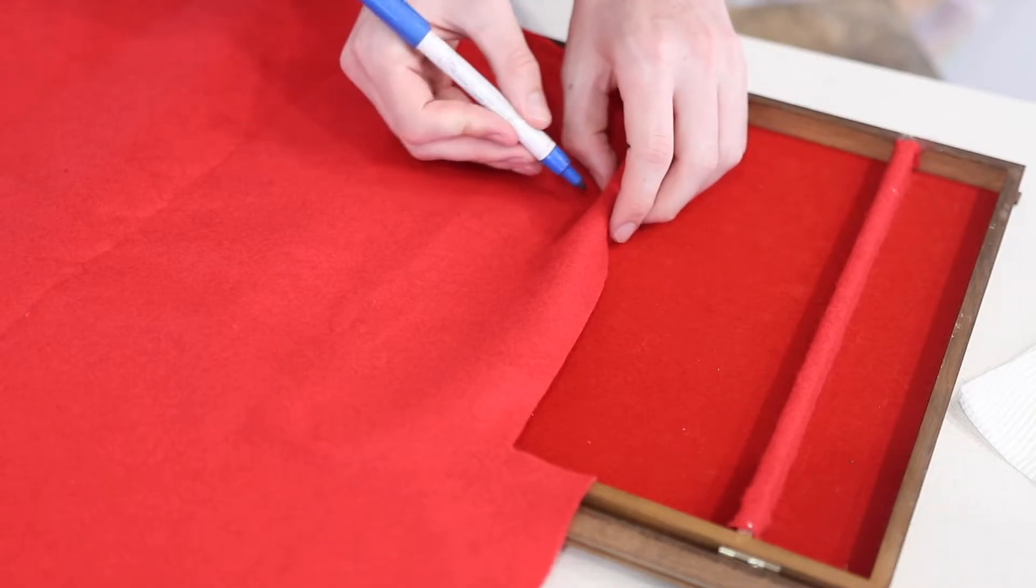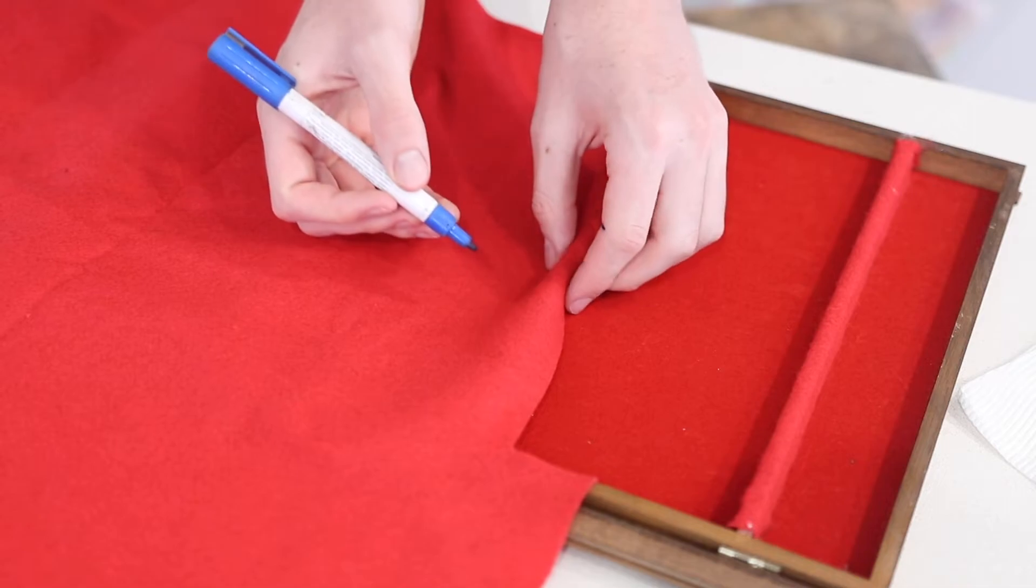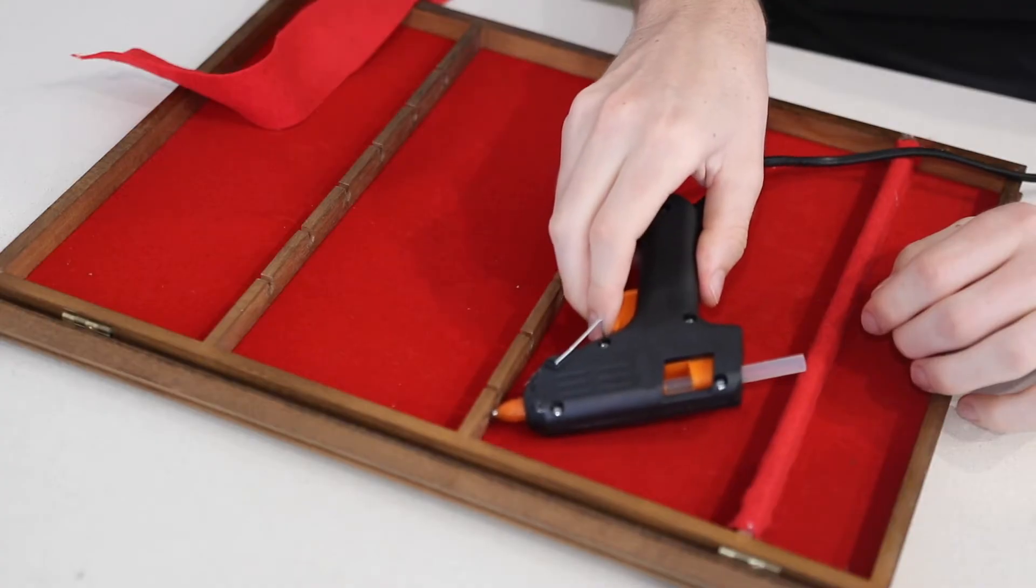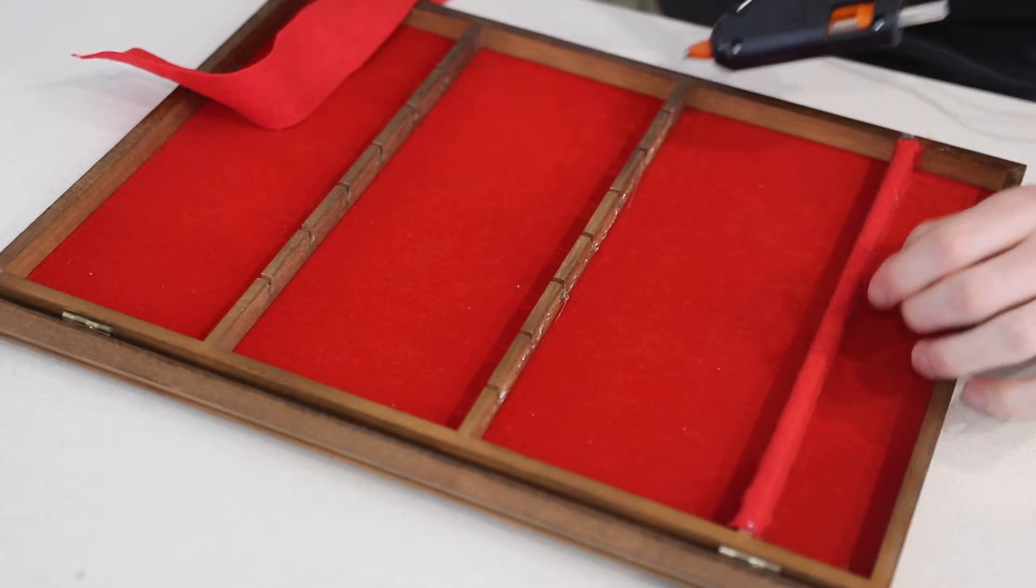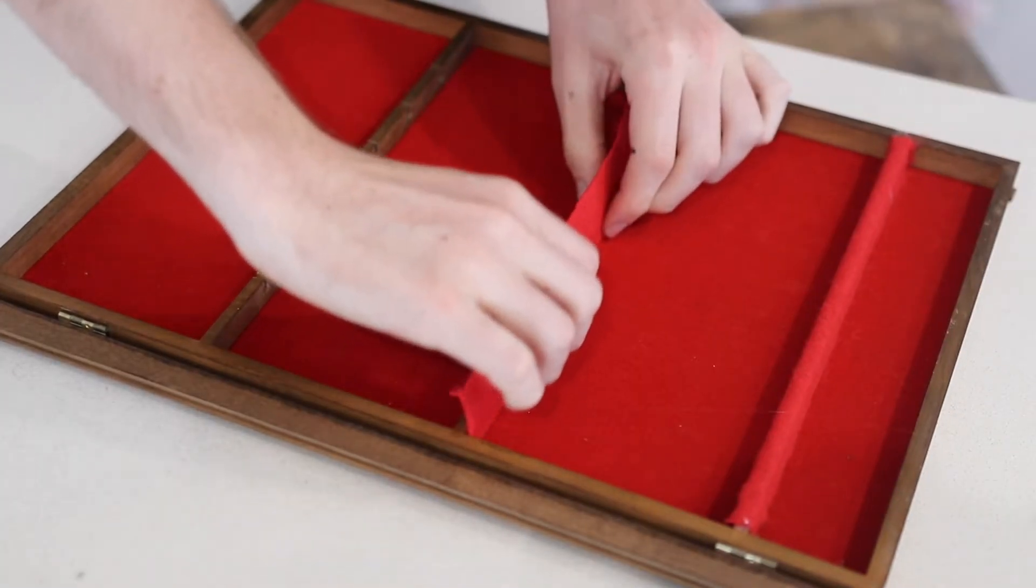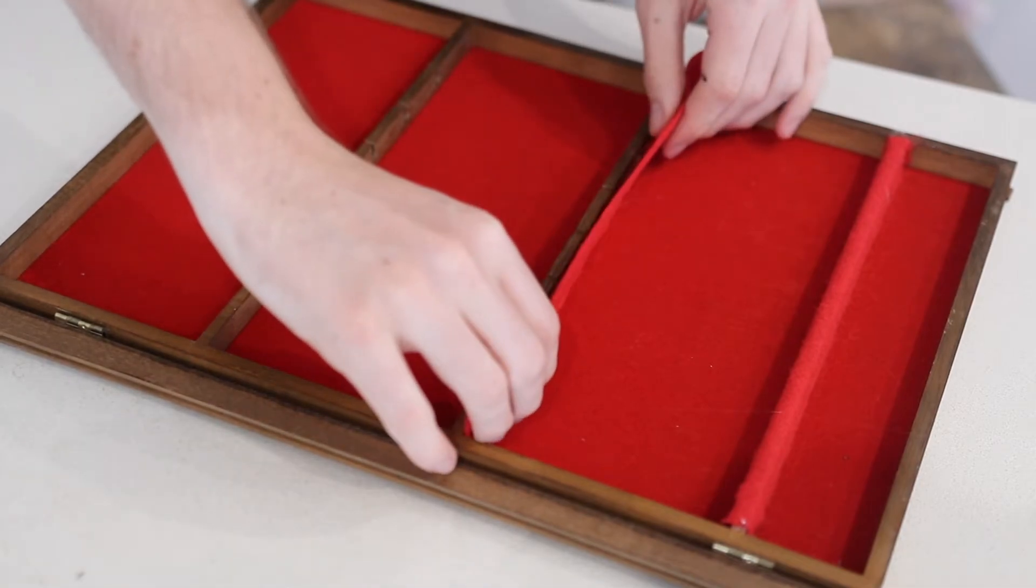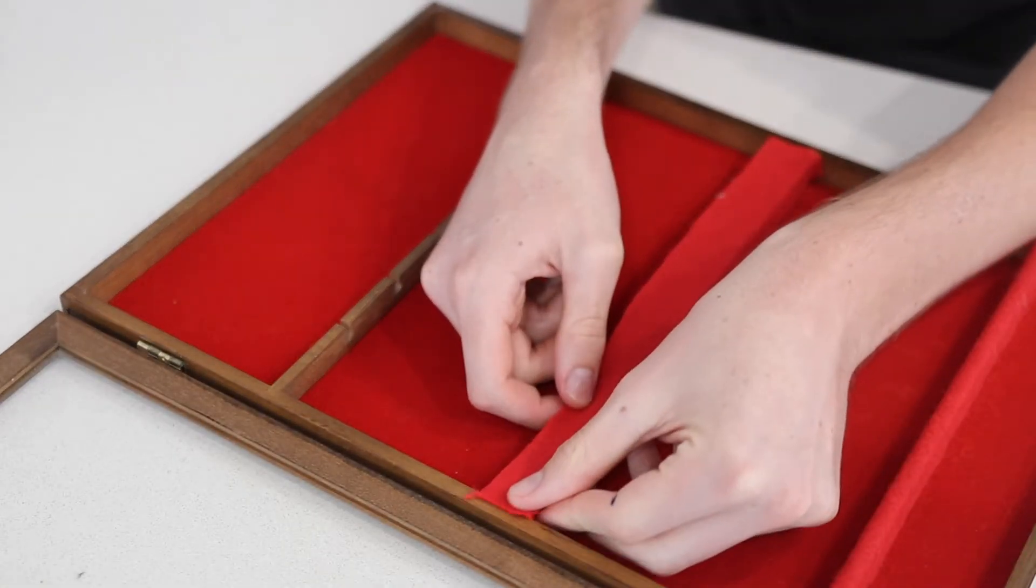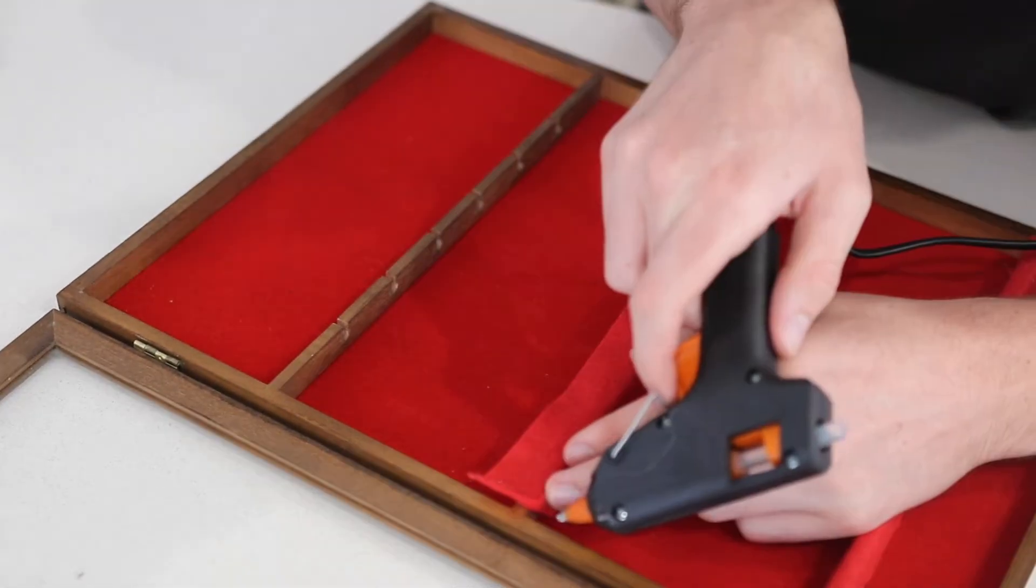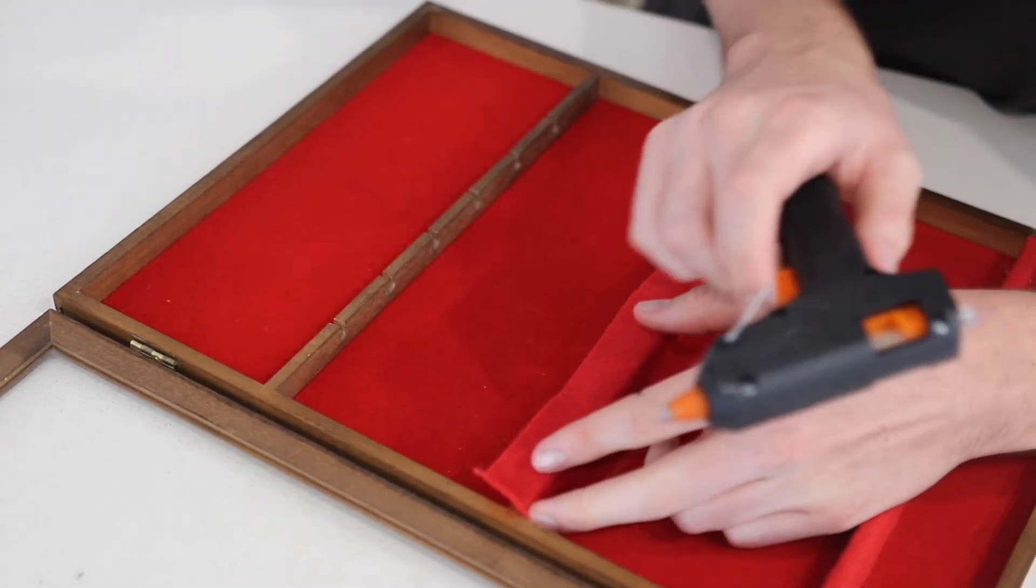And then just repeating that for the middle insert, putting some dots on the felt and then cutting it out. Then once again getting the glue gun and running along the top of the insert. And then filling in the edges and cutting off any excess felt.